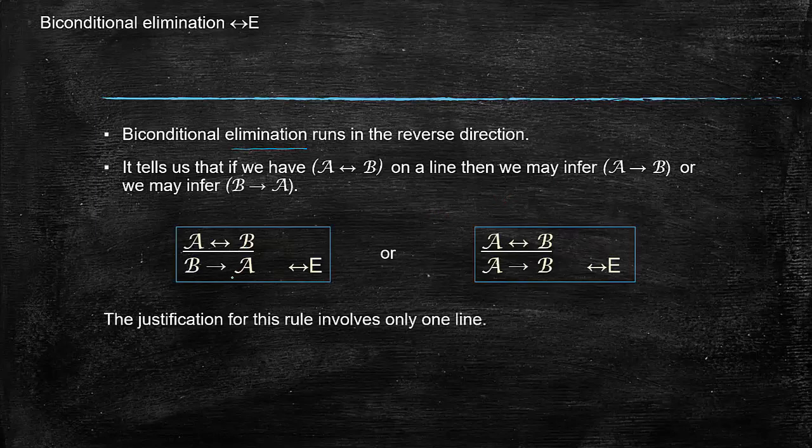So A if and only if B, you could write if B then A by biconditional elimination, citing here just one line. Or A if and only if B, you can also write if A then B by biconditional elimination, again citing just one line.